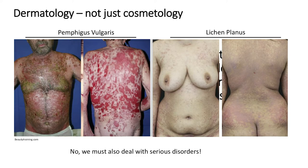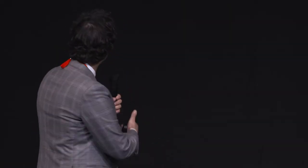Pemphigus vulgaris and Lichen planus. The first is a blistering autoimmune disorder of the skin, and the second is an autoinflammatory disorder of skin and mucosa. They both have an unclear pathogenesis and an unmet need for new therapeutic treatments.